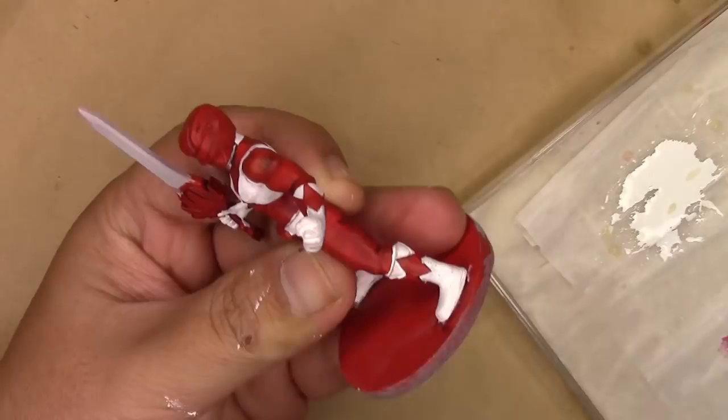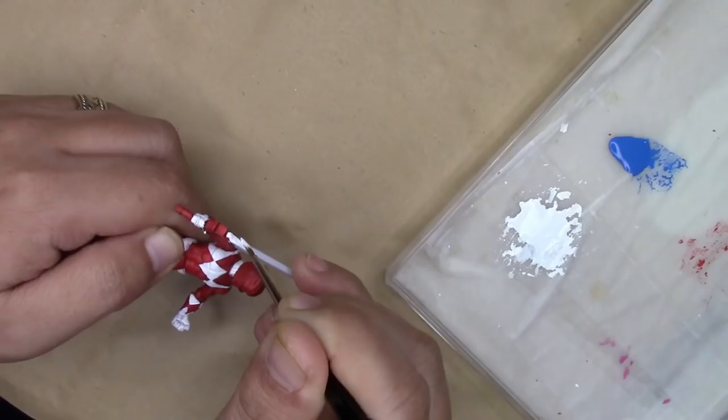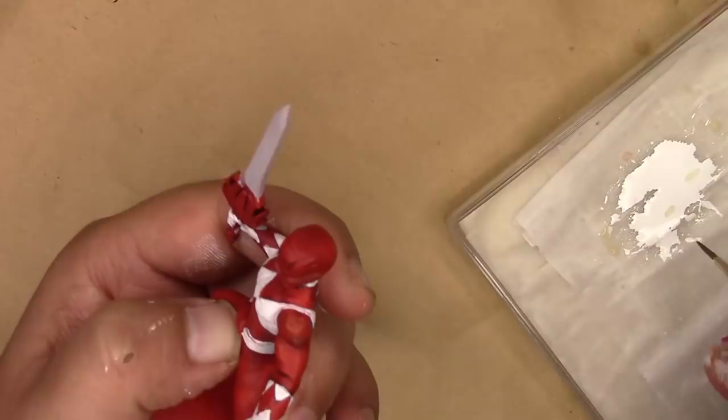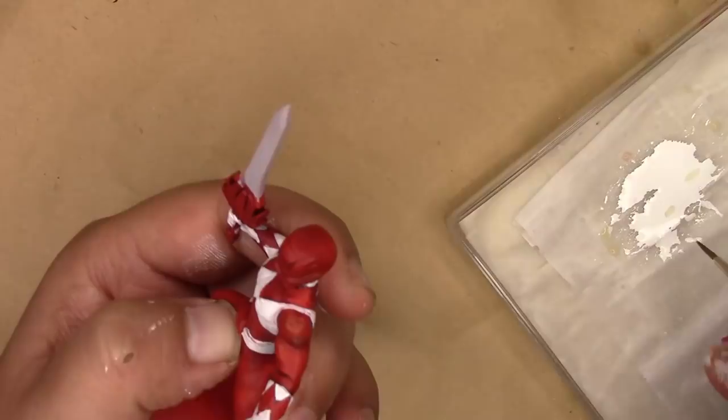There's a few things that all Rangers have that will be white: the diamonds on their chests, their necks, their gloves, their belts, and their boots. There's also a few details unique to each Ranger that we'll be painting white as well.